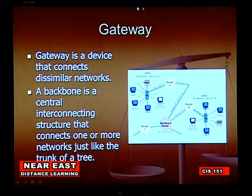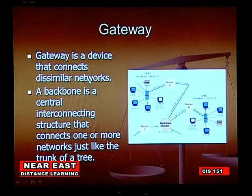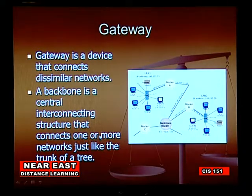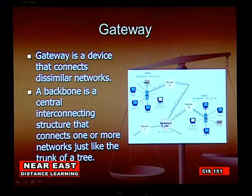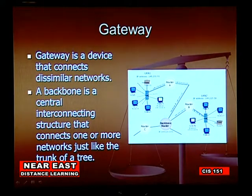A gateway is a device that connects smaller networks. The backbone is a central interconnection structure that connects one or more networks, just like the trunk of a tree. As we see here, one server is connected using a backbone router, and this router delivers data to Router A, Router B, and Router C.